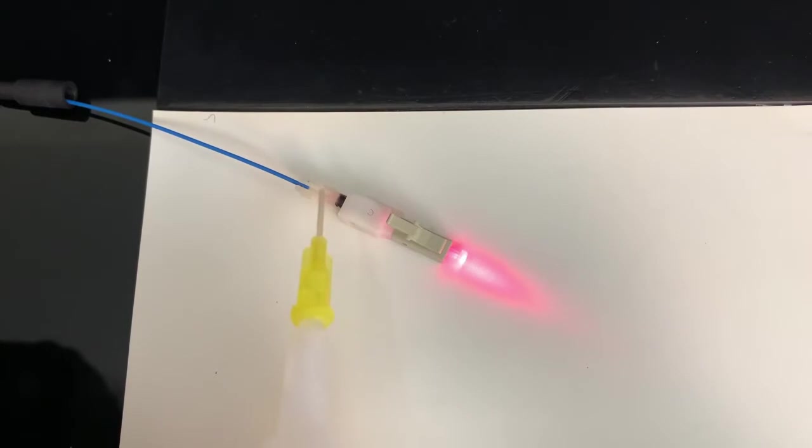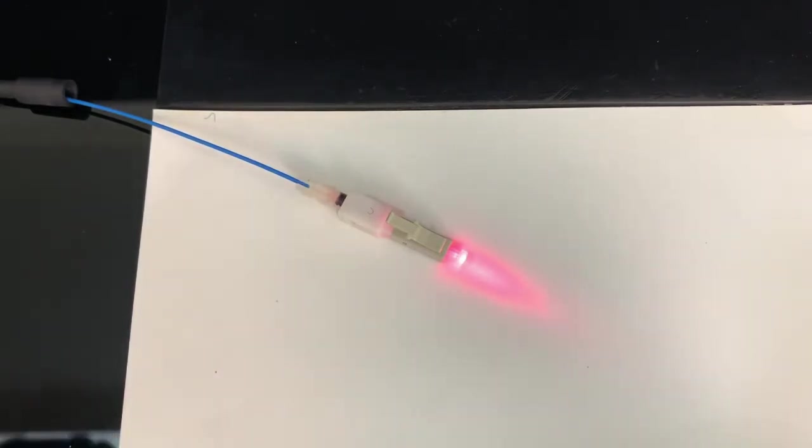Now once all light is passing through the tip, you're going to add one single drop of your Loctite 414 glue and you're going to give it about one minute to dry.